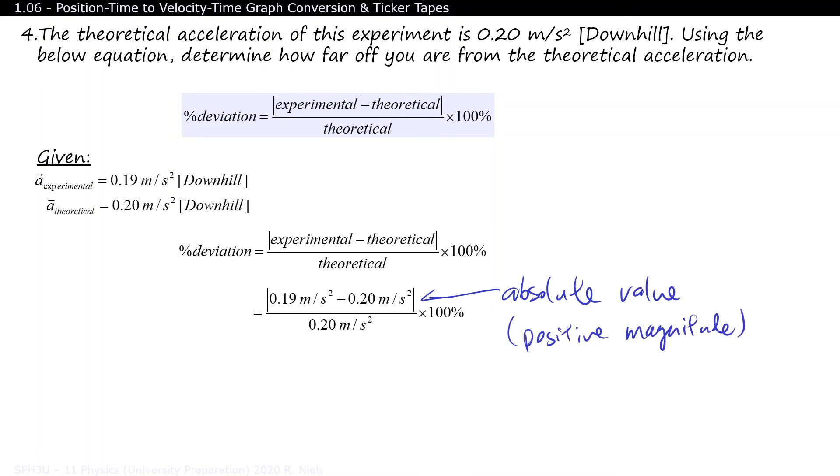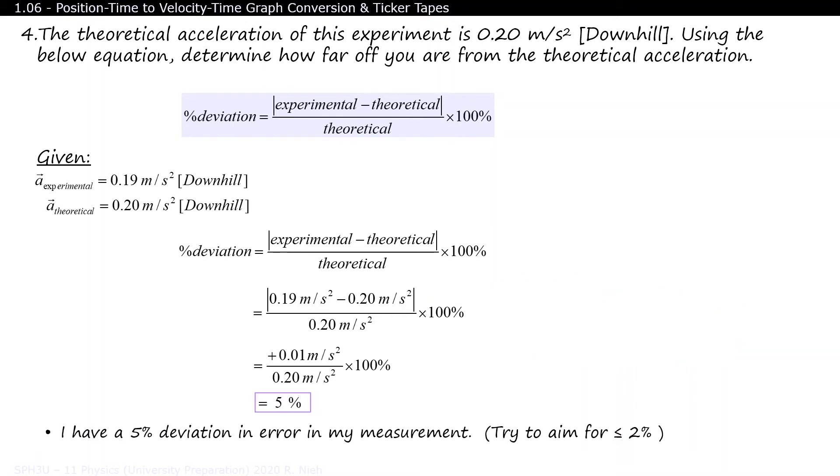In other words, if the answer is negative, make it positive. In my efforts, I ended up with a percentage deviation of 5%. Not bad. With enough practice, you can achieve a deviation of 2% or less. So how can you improve on this?